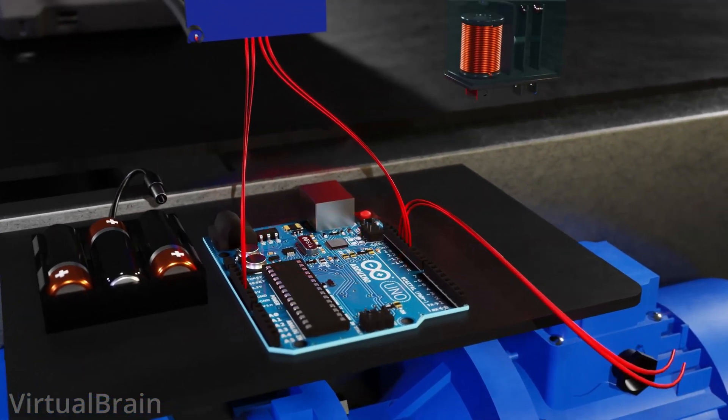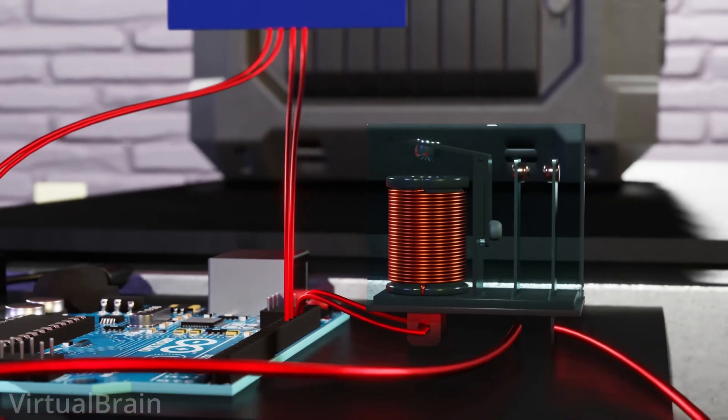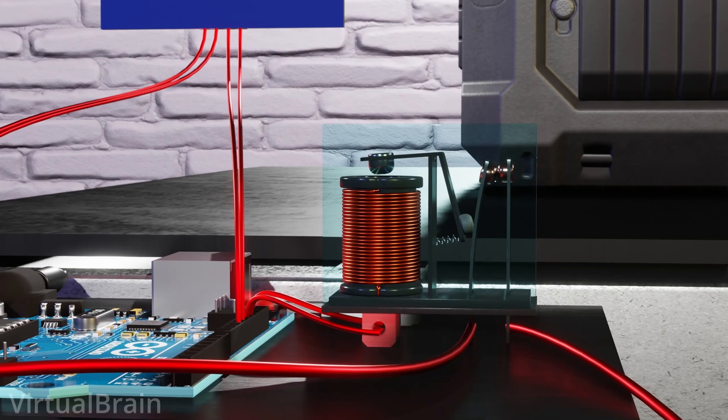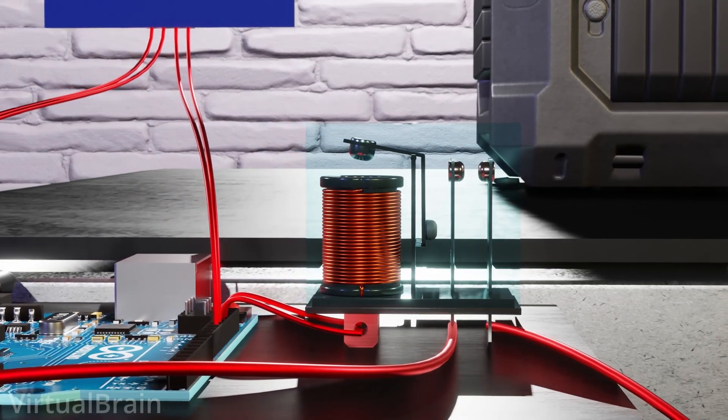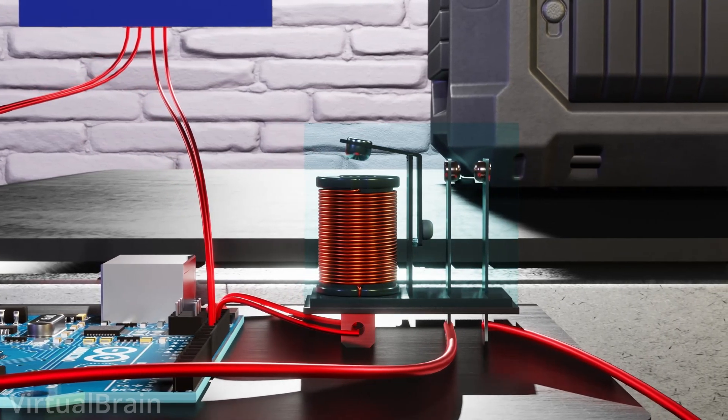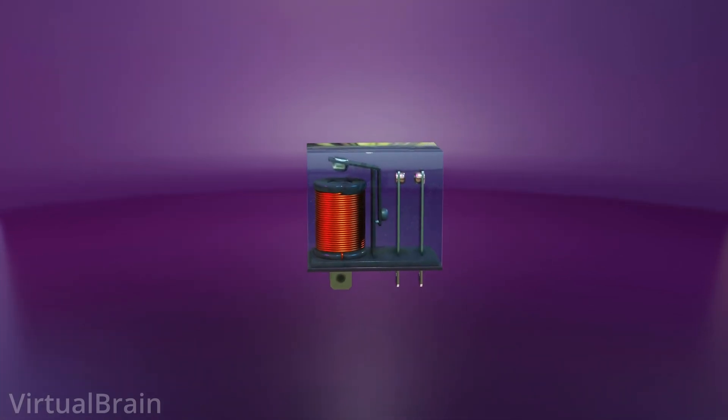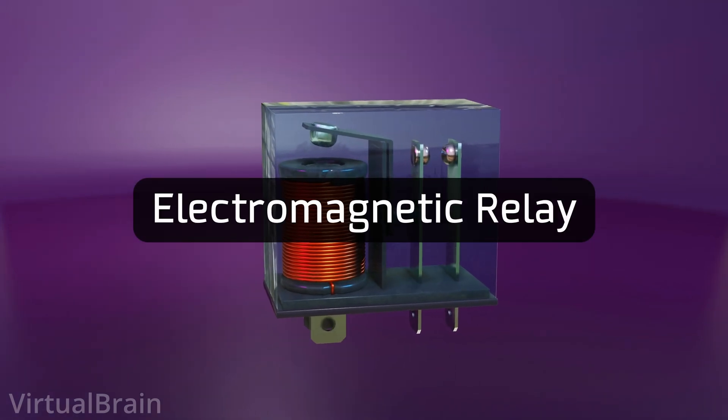Fortunately, the relay allows us to solve all these problems easily. The signal that previously lit the LED will now be responsible for activating or deactivating the relay, that is, opening or closing the passage of electricity through the circuit that feeds the motor, all without both circuits coming into contact. There are several types of relays, but to understand how they work, we will focus on one of the most used, electromagnetic or electromechanical relays.